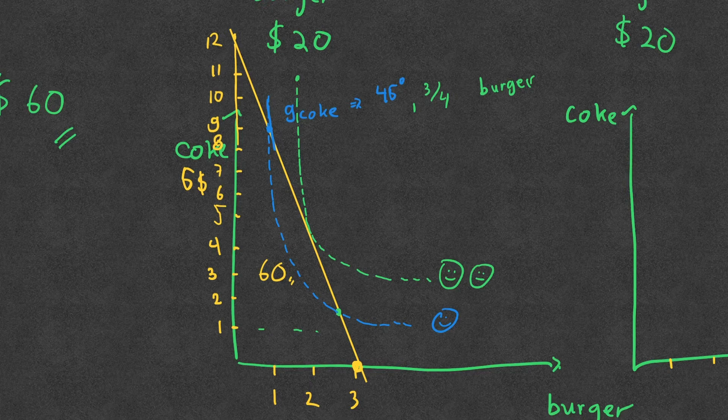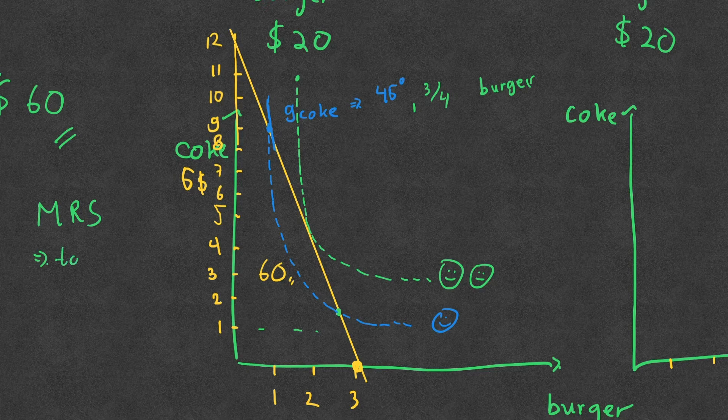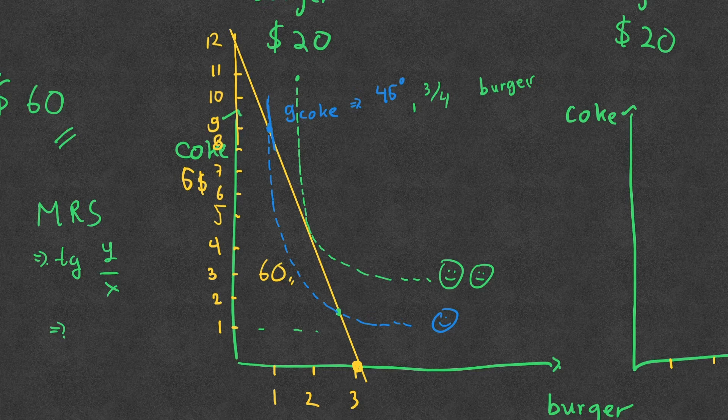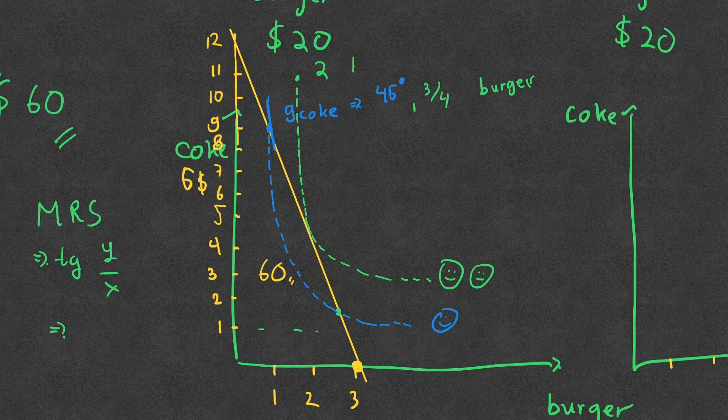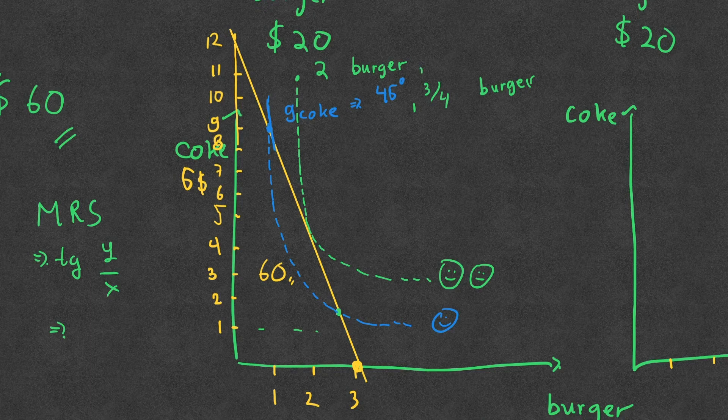We now know the concept of marginal rate of substitution. What does it mean? It's actually tangent dy/dx, which means what's the point that you are happy more and what you're willing to sacrifice. In this level, for example, you will get two burgers and 11 cokes.